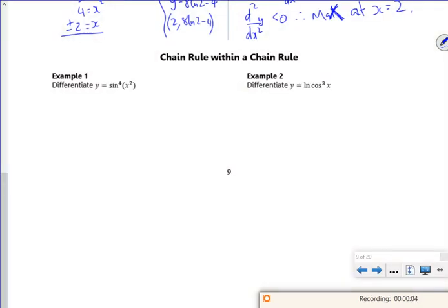This last example definitely deserves its own little video. It's chain rule within a chain rule, so we're going to be a bit careful how we do this. If I write it as sine of x squared, all to the power of four, right, so chain rule. So I need to differentiate the bit inside the bracket.